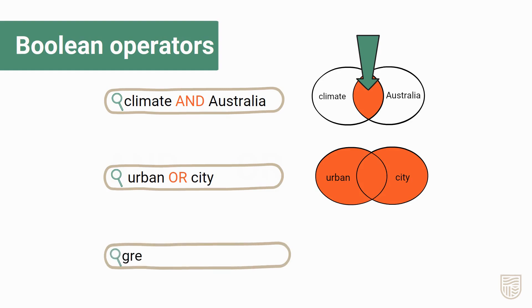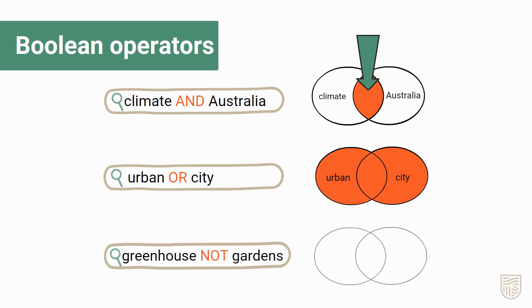Use NOT to exclude certain terms. For example, if you were getting lots of results about gardening, you could change your search to greenhouse NOT gardens.